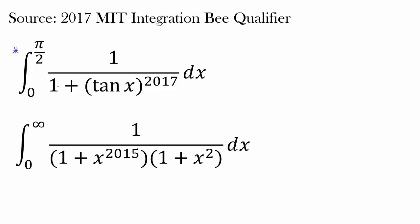We wish to evaluate the integral from 0 to π/2 of 1 over (1 + tan^27(x)) dx. But before we examine this integral, I want to talk more about the last video's integral — the integral from 0 to infinity of 1 over this crazy expression that we talked about in the last video on the MIT Integration B playlist. We found that this entire expression was equal to π/4. Some of you discovered a very elegant property of this exponent: it does not have to be 2015.